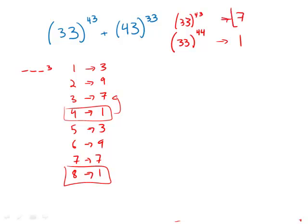For 43 to the 33, well the closest multiple of 4 to 33 is 32. So 43 to the 32, that's going to be 1, that's a multiple of 4. And then we're going to go up 1 in the pattern from there, so 43 to the 33, that's going to end in 3.